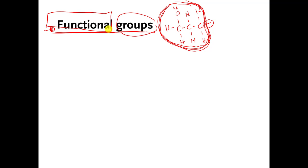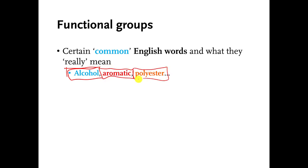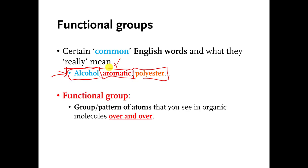If you have a pattern of atoms that does that, that pattern is called a functional group, because it's a group of atoms that gives a certain function to whatever molecule you attach it to. In this video, I'm going to describe some functional groups — patterns of atoms you'll need to recognize and name. There are certain functional groups with names identical to common English words: alcohol is a functional group, aromatic is a functional group, polyester is a functional group.